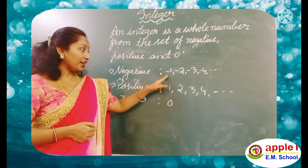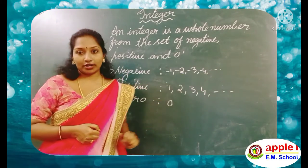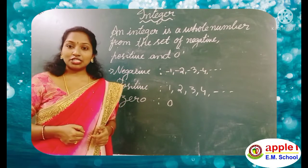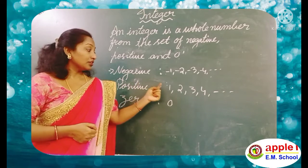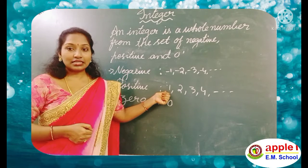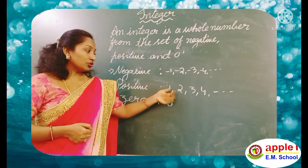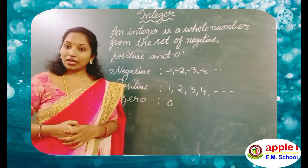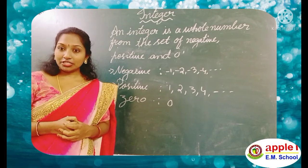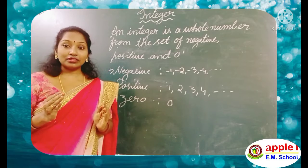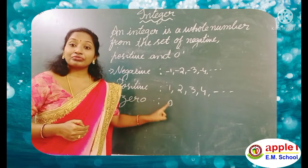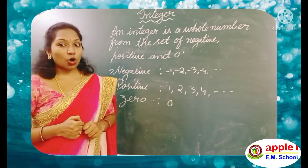See here — negative numbers: minus 1, minus 2, minus 3 and so on. The numbers which have a minus sign are said to be negative numbers. Positive numbers: 1, 2, 3, 4 — here we don't have any sign, that means it is plus. So these are positive numbers. And 0. Integers are the numbers which consist of negative numbers, positive numbers including 0.